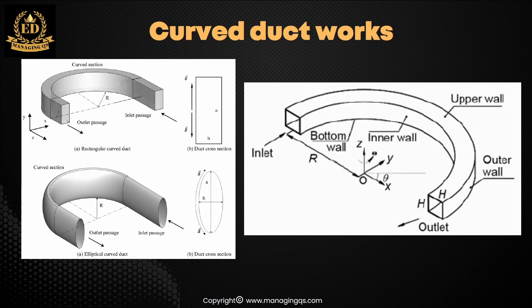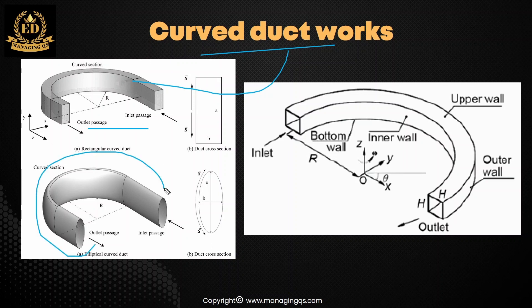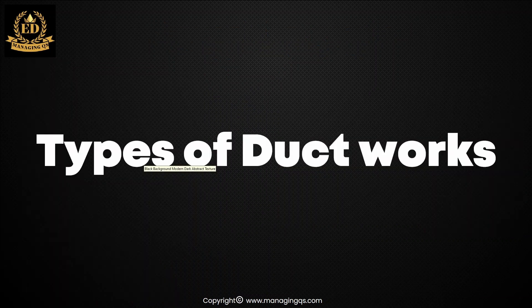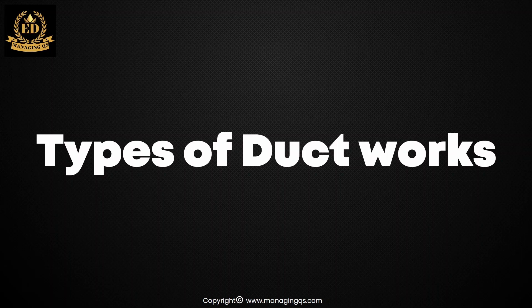The next one is curved ductwork. We already discussed straight ductwork — this one is curved. Under curved ductwork we can also see rectangular, circular, and oval shapes. So curved ductwork also covers all three shapes. In this short video you will get a clear idea about the types of ductwork. See you in another great video — thanks guys!